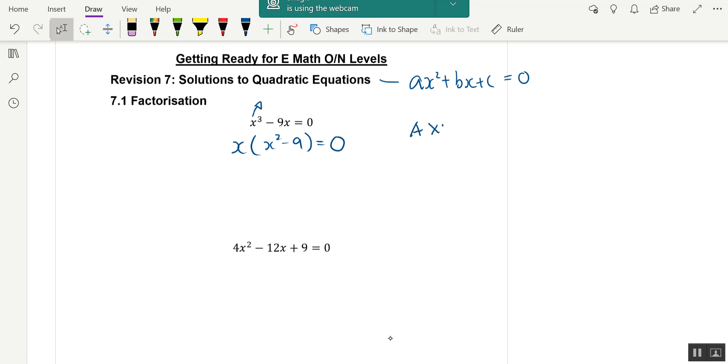So in math, if a multiply by b is equal to 0, it means one thing. Either a is 0 or b is 0. So in this case, x is equal to 0 or x² minus 9 is equal to 0.